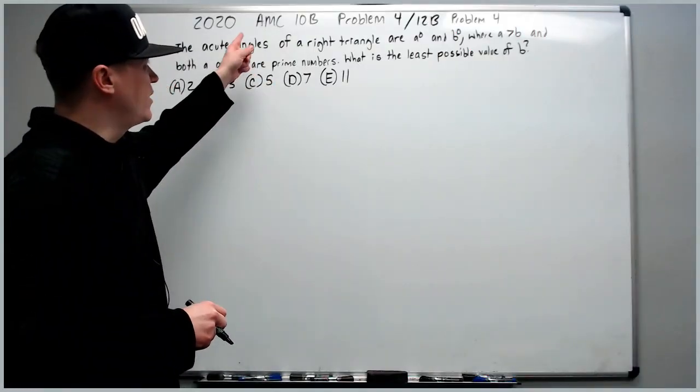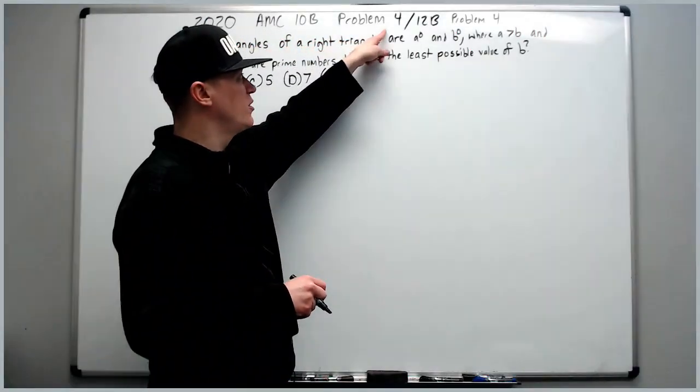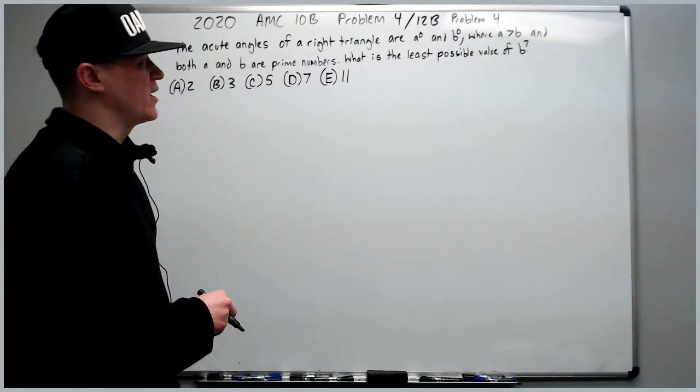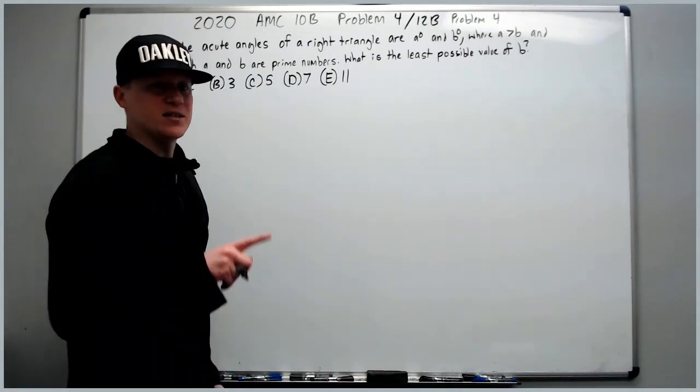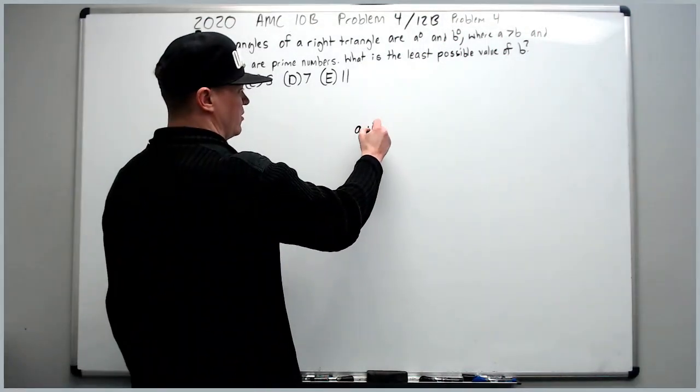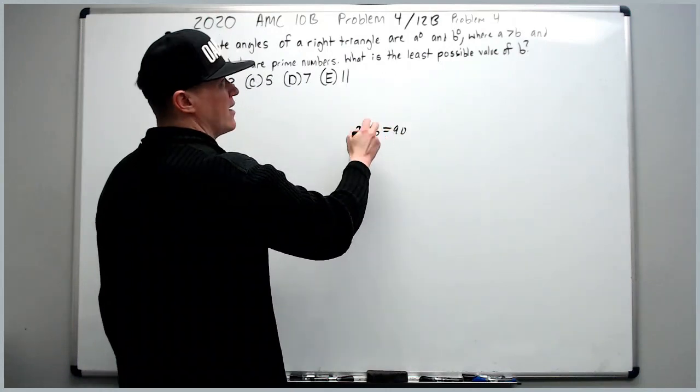Okay, and here we are at the 2020 10B problem 4. Also, the 12B problem 4. The acute angles of a right triangle are A degrees and B degrees. Pause right there. You should know that the acute angles of a right triangle add up to 90. Write that down and continue.